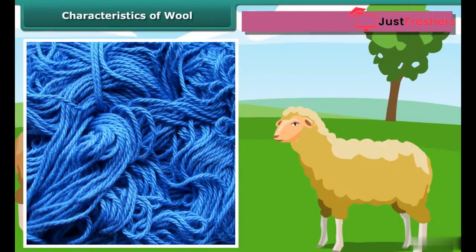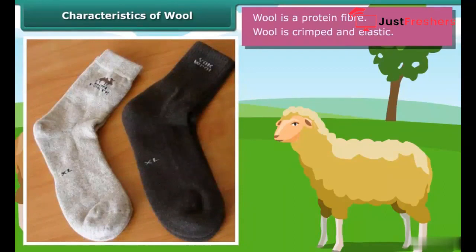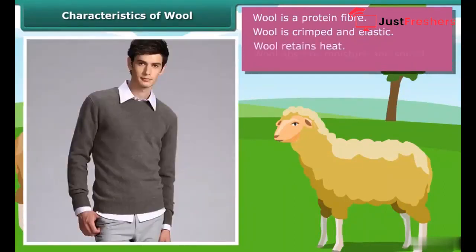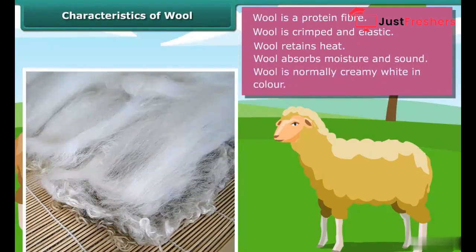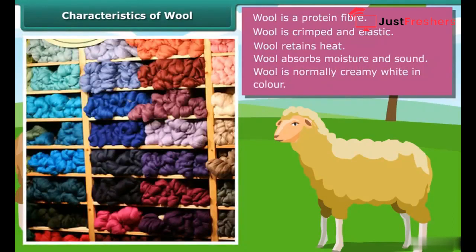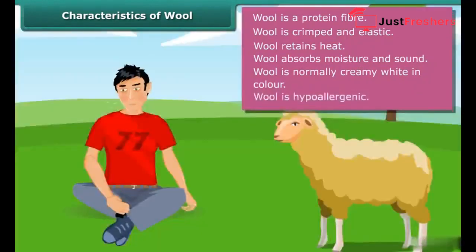Wool is a protein fiber. It is crimped and elastic. The crimp makes wool bulky and helps it retain heat. Wool absorbs moisture and sound because it is hollow. Wool is normally creamy white in color, but it can also be black, brown, or silver. Wool is hypoallergenic — in other words, it causes fewer allergies in human beings.